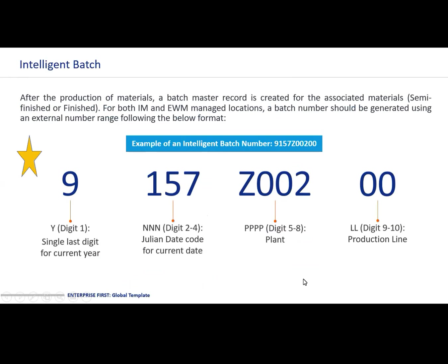After the production of materials, a batch master record is created for the associated materials — semi-finished goods or finished goods — for both IM and EWM locations. The batch number is generated using an external number range following the below format. It will be a 10-digit code in which the first digit is the single last digit of the current year, the following three digits are the Julian date, the following four digits are the plant in which the material was produced, and the last two digits are the production line on which it was produced. This will be our intelligent batch number.